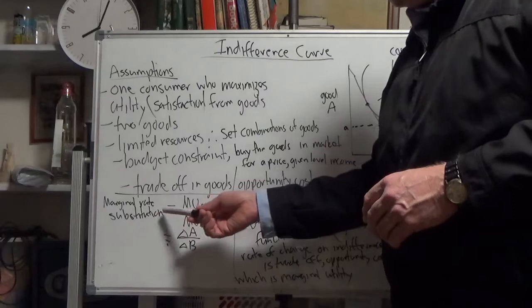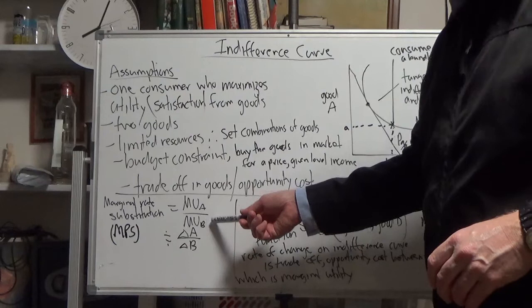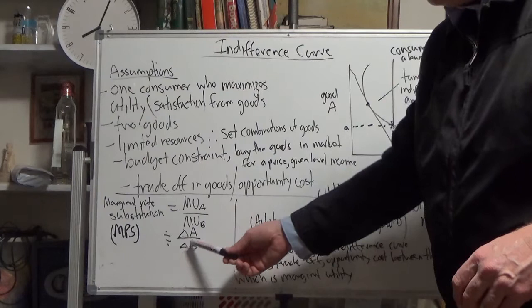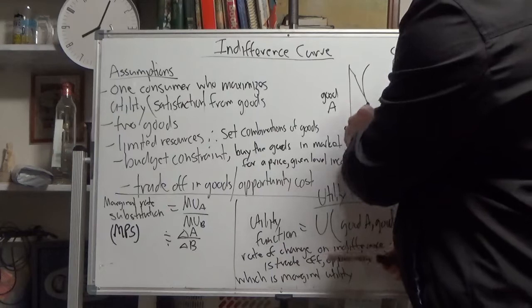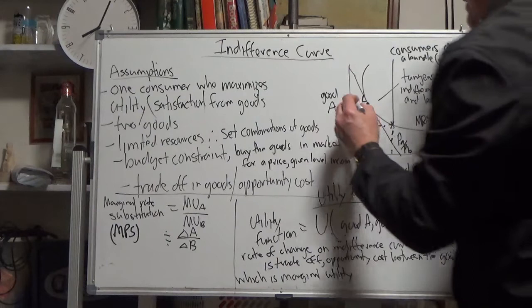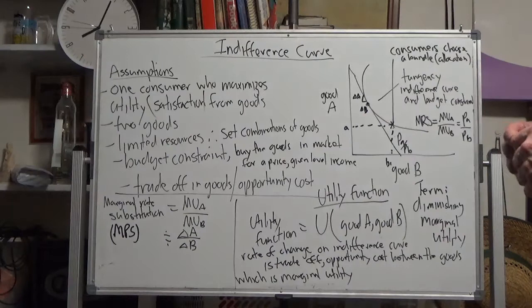Marginal rate of substitution, MRS, is a ratio of the marginal utility of good A over the marginal utility of good B. An approximation is a small change of A along the curve and a very small change in B, like considering that small right-angle triangle, that little change in good A over that little change of good B.